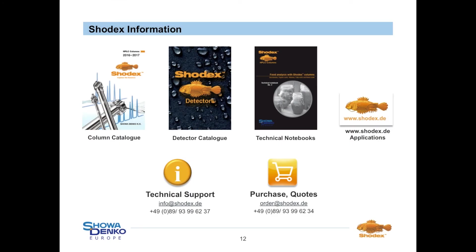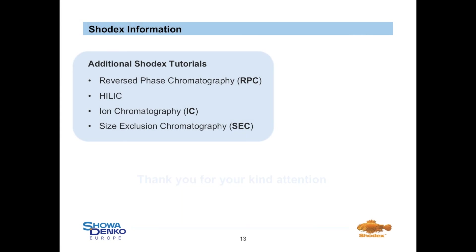If you need further information, please register on our new website www.shodex.de. There you can find PDF files for download, including our column and detector catalogues, technical notebooks, and you have access to our application database. In case you need support, please contact us via info@shodex.de. For quotes or purchase orders, please send an email to order@shodex.de. Moreover, we offer further tutorials covering reversed phase, HILIC, ion, and size exclusion chromatography. Thank you very much for your kind attention.